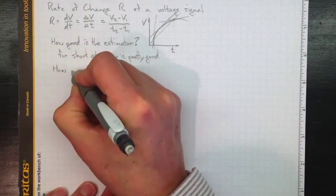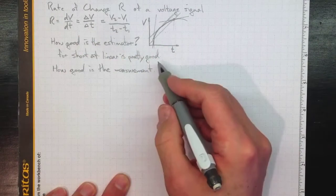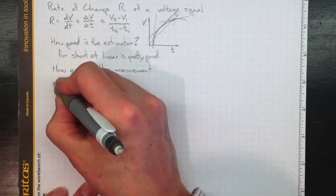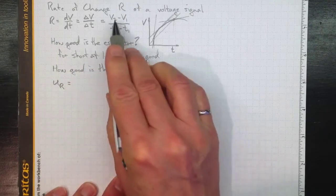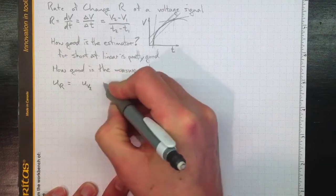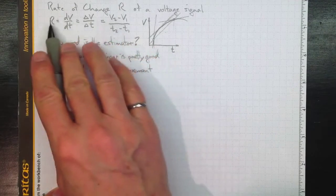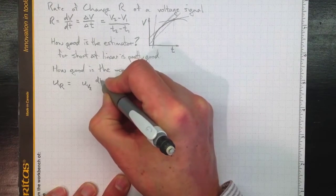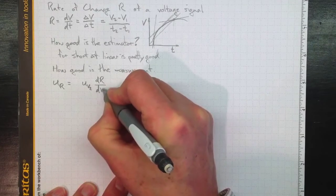Now suppose we set out to measure it. The next question is, how good is our measurement? Well, to do that we need to assess the uncertainty in the result of our measurement. So the uncertainty in our result is going to depend on the uncertainty in V2 times the effect of V2 on the overall result. So for that we need to know what the change in R will be for a change in V2.